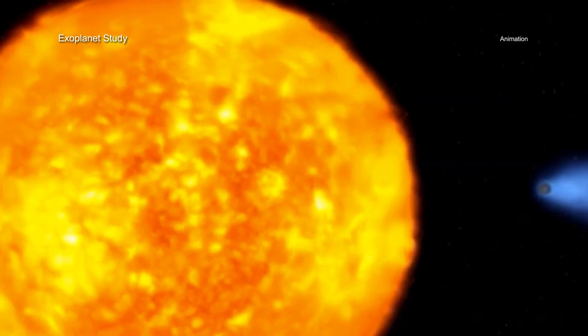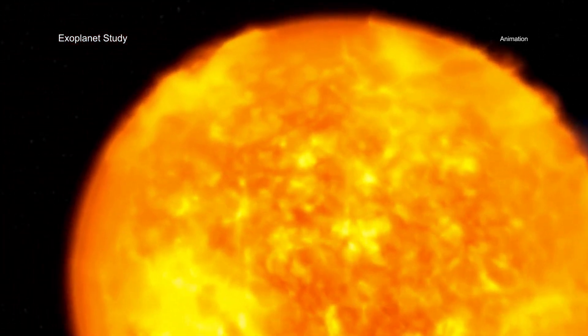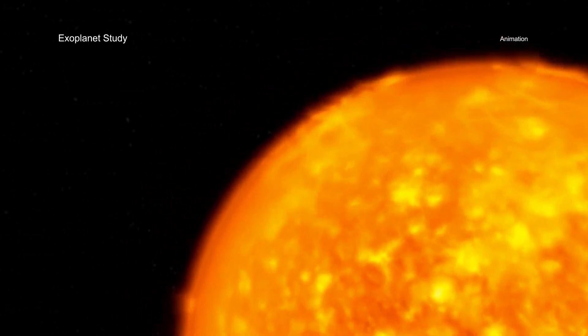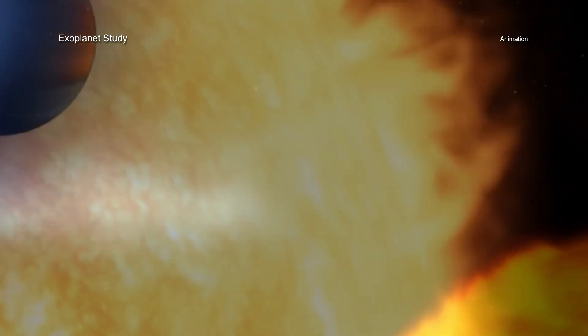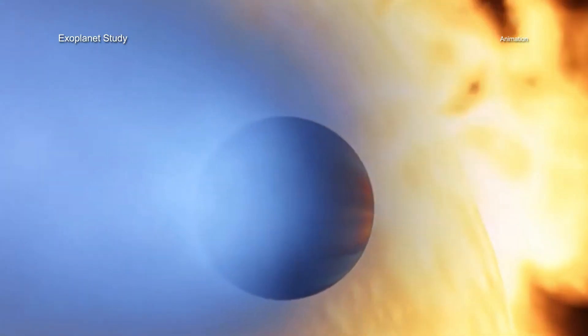There are several other factors influencing what could make a planet suitable for life as we know it. One of those factors is the amount of harmful x-rays and ultraviolet light they receive, which can damage or even strip away the planet's atmosphere.